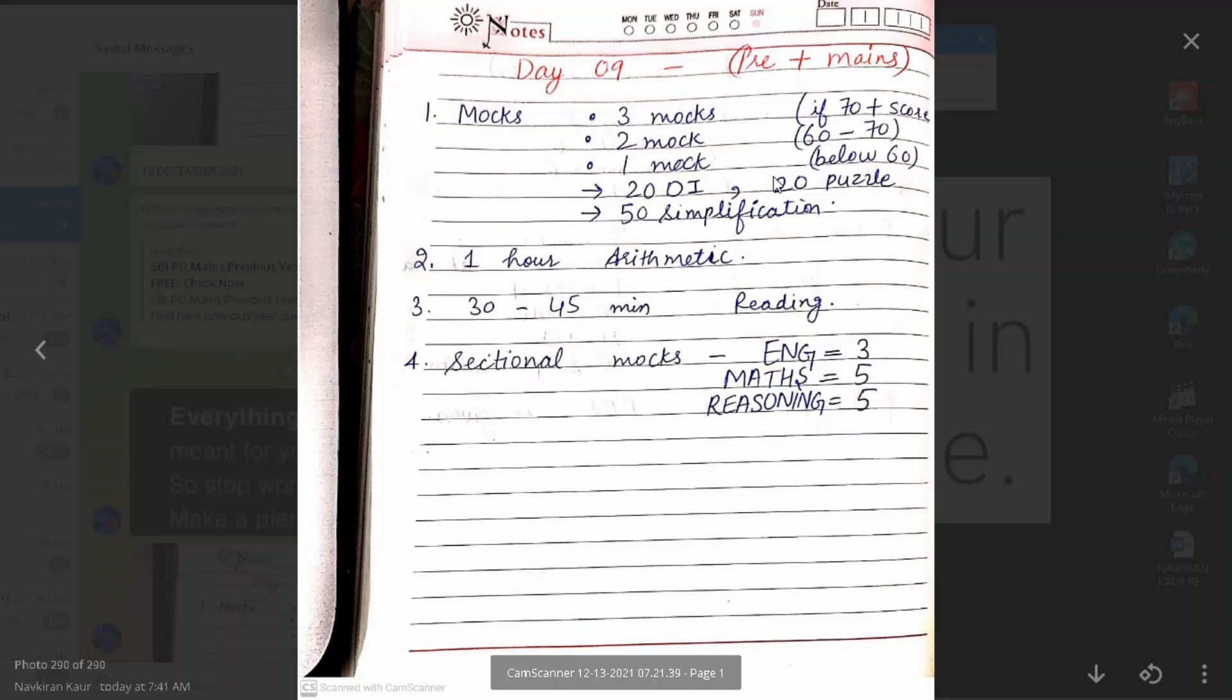So this is all about today's video. And you will have to do these targets. And for PDFs, for anything else, you will have to join our telegram channel. And the name of the telegram channel is Bank Influent NK channel. So you are most welcome there. Thank you so much.